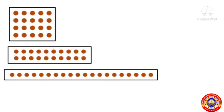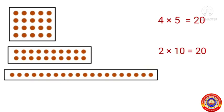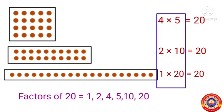After arranging the number of dots widthwise and heightwise, we find that 4 multiplied by 5 is equal to 20, 2 multiplied by 10 is equal to 20, and 1 multiplied by 20 is equal to 20. From this we found out that the factors of 20 are 1, 2, 4, 5, 10, and 20.